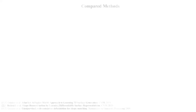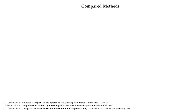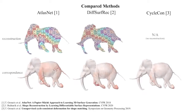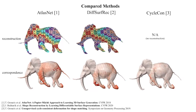We have compared our approach to several state-of-the-art methods for surface reconstruction and for correspondence estimation. AtlasNet and differential surface reconstruction also follow the atlas-based approach, while cycle-consistent deformation is based on consistently deforming one point cloud to another. Note that CycleCon does not produce surface reconstruction and hence we don't show it.